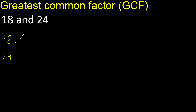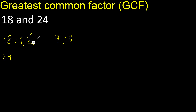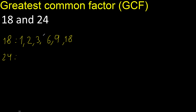Factors. Always start with one. Eighteen divided by one is eighteen. Next, two. Eighteen divided by two is nine. Next, three. Eighteen divided by three is six. Next, four. Eighteen cannot be divided by four. Next, five. Eighteen cannot be divided by five. Next, six. Six is here.